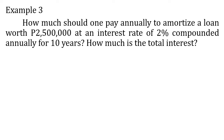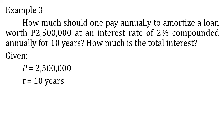Example three: How much should one pay annually to amortize a loan worth 2.5 million pesos at an interest rate of 2 percent compounded annually for 10 years? How much is the total interest? This is an amortization problem. The present value is 2.5 million, time is 10 years, r is equal to 2 percent or 0.02, and the compounding period is yearly so m is equal to 1.